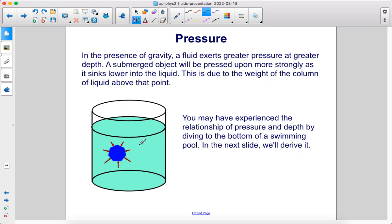Here is a picture that illustrates what I was saying on the previous slide. In the presence of gravity, a fluid exerts greater pressure at greater depth. A submerged object will be pressed upon more strongly as it sinks lower into the fluid. This is due to the weight of the column of liquid above that point, or above the object here. You may have experienced the relationship of pressure and depth by diving to the bottom of a swimming pool. In the next slide, we'll derive it.